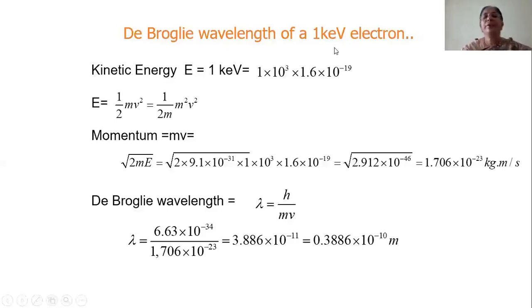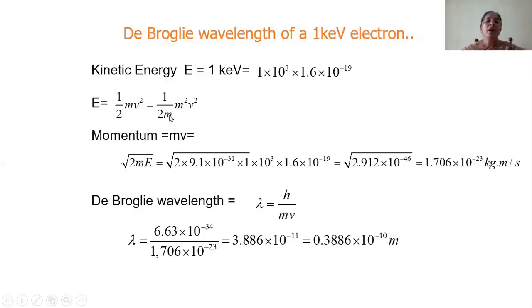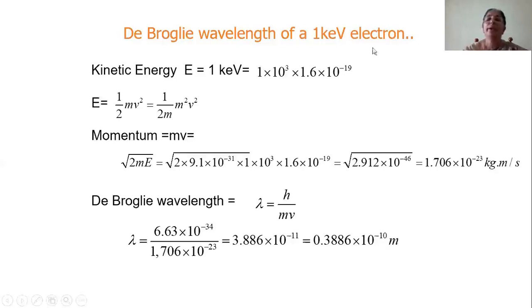One more problem: calculate the De Broglie wavelength of a 1 kilo electron volt electron. Kinetic energy is given as 1 kilo electron volt. 1 kilo means 10 cubed, and electron volt means 1.6 into 10 power minus 19. E equals half mv squared. Multiplying and dividing by m, you get half m squared v squared by m, so momentum mv equals square root of 2mE. E is already given. Substitute and get the momentum. Then De Broglie wavelength lambda equals h by mv, and you can calculate the wavelength associated with the 1 kilo electron volt electron.